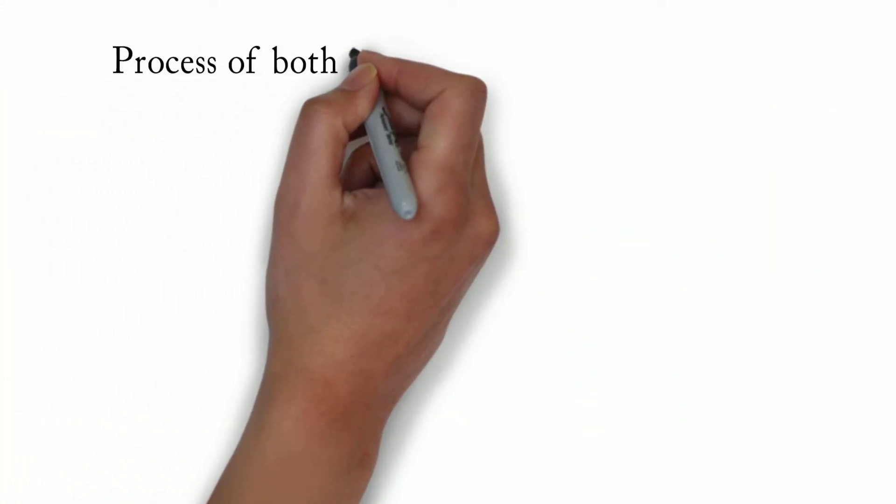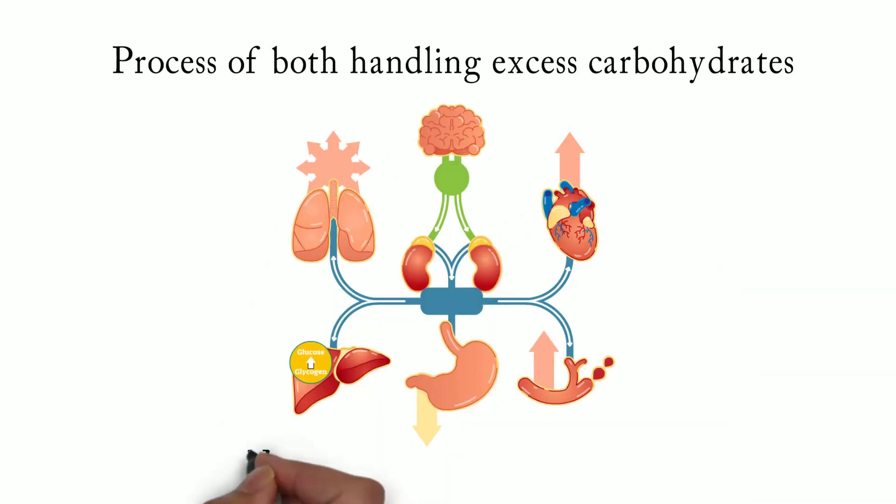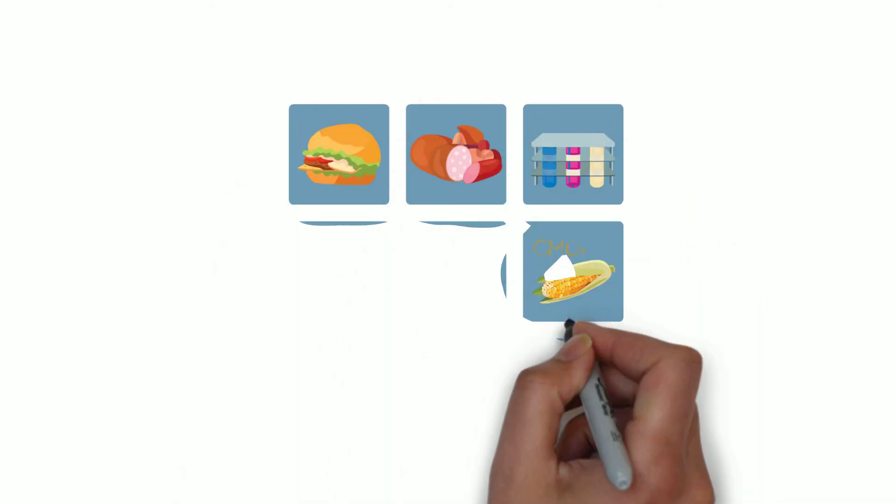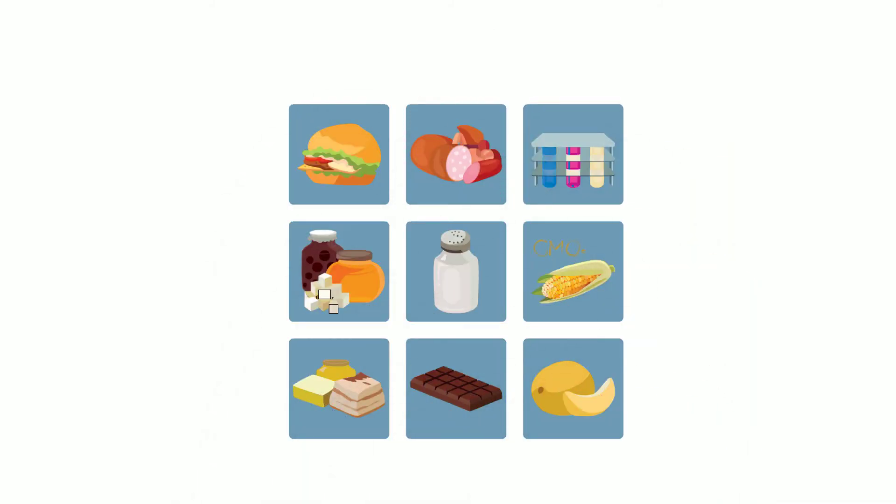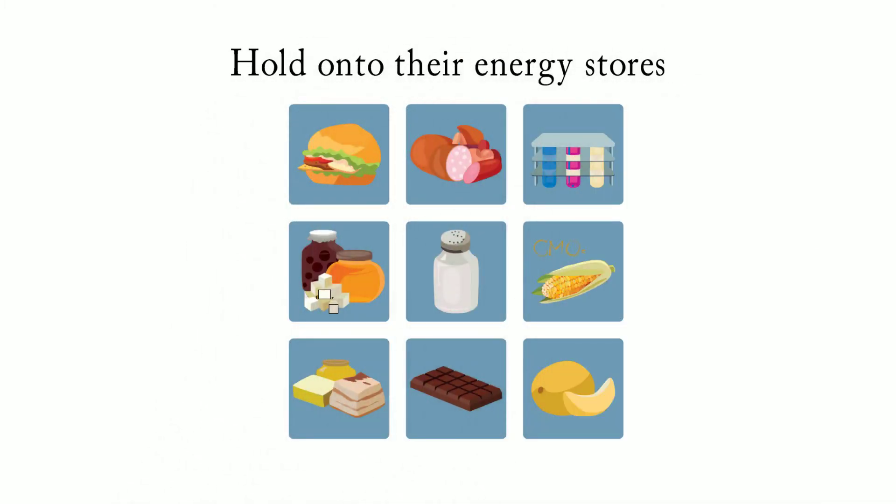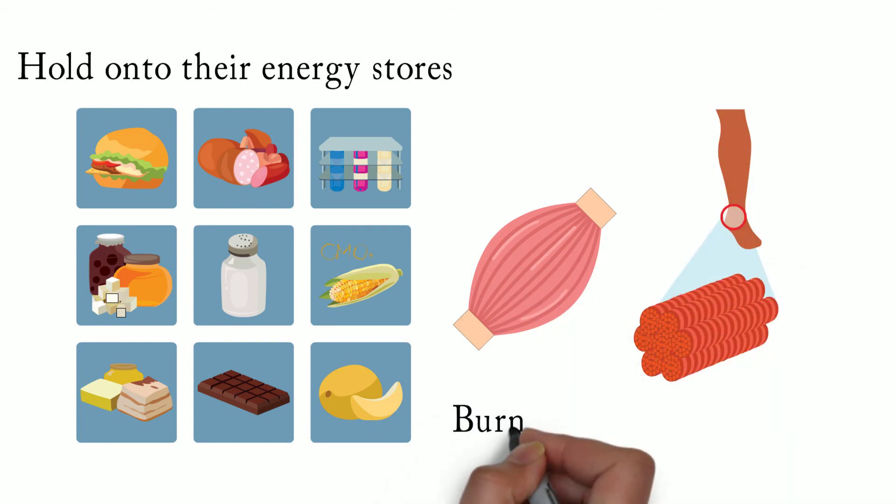This process of both handling excess carbohydrates in the blood and the inhibition of the breakdown of fat is controlled by a complex hormone signaling system, which includes insulin as one of the primary signals. Elevated blood sugar from a meal triggers the release of insulin, which tells our fat cells to hold on to their energy stores, and tells our muscles and other tissues to absorb and burn the glucose first.